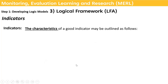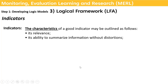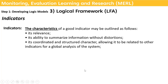The characteristics of a good indicator are as follows. Relevance: it should be relevant to the project goal or outcome — goal-level indicators should relate to the goal, outcome-level indicators to the relevant outcome developed in your result framework. It should be able to summarize information without distortion — simple and providing correct, summarized information. It should have a coordinated and structured character, allowing it to be related to other indicators for global analysis of the system, such as aligning with SDG indicators.